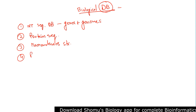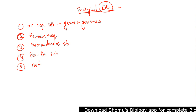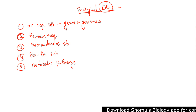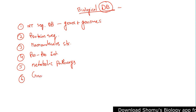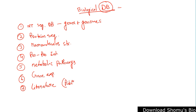We have protein-protein interaction databases, which are very important for studying pathways. We also have metabolic pathway databases, since there are numerous different types of metabolic pathways occurring inside a cell. Additionally, there are gene expression and profiling databases, and literature databases.